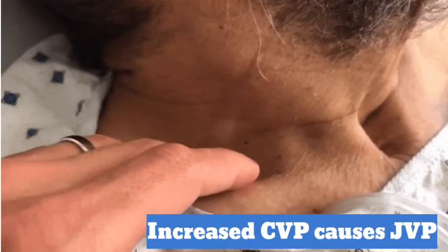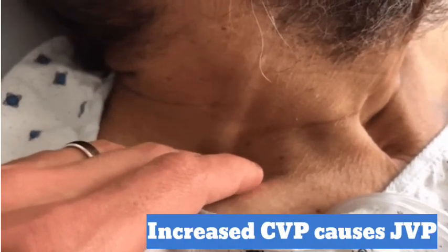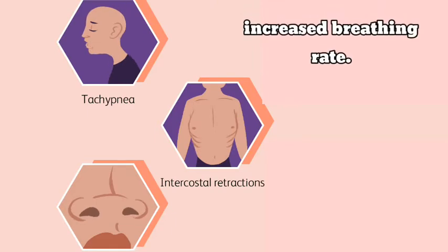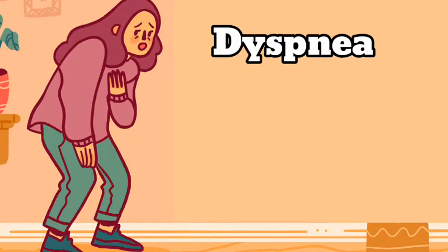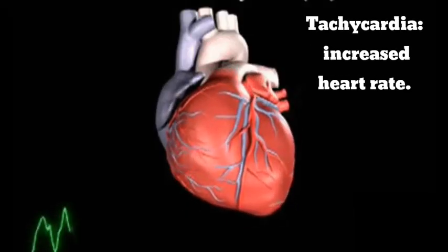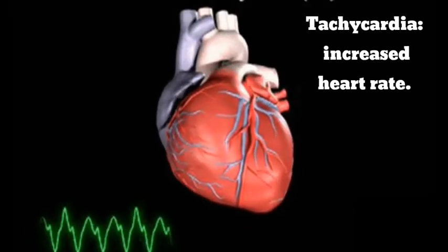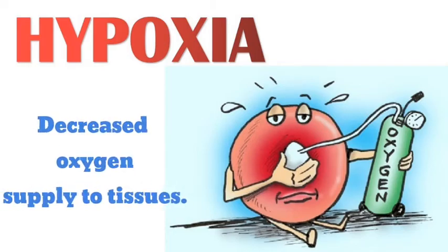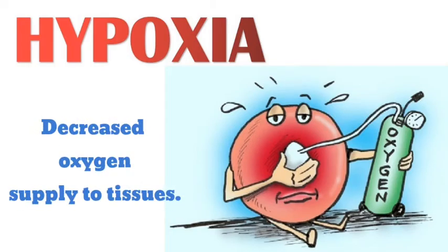An increase in central venous pressure can result in distended neck veins or hypotension. Patients may have tachypnea — increased breathing rate — dyspnea — difficulty in breathing — tachycardia — increased heart rate — and hypoxia, which is decreased oxygen supply to tissues.